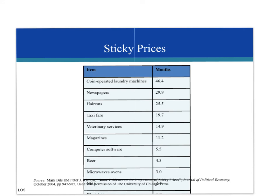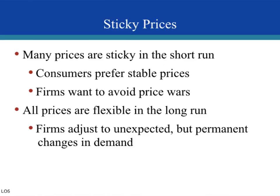Some examples of sticky prices: coin-operated laundry machine prices take an average of 46.4 months to change, about 30 months for newspapers, and 25.5 months for haircuts. On the lower end, microwave oven prices change roughly every 3 months, and beer prices every 4.3 months. As a rule of thumb, prices tend to be much stickier in the short run, partly due to menu costs — businesses have catalogs or menus to reprint. But in the long run, prices are much more flexible: firms have time to plan, expand, downsize, or find new cost-reducing technology.